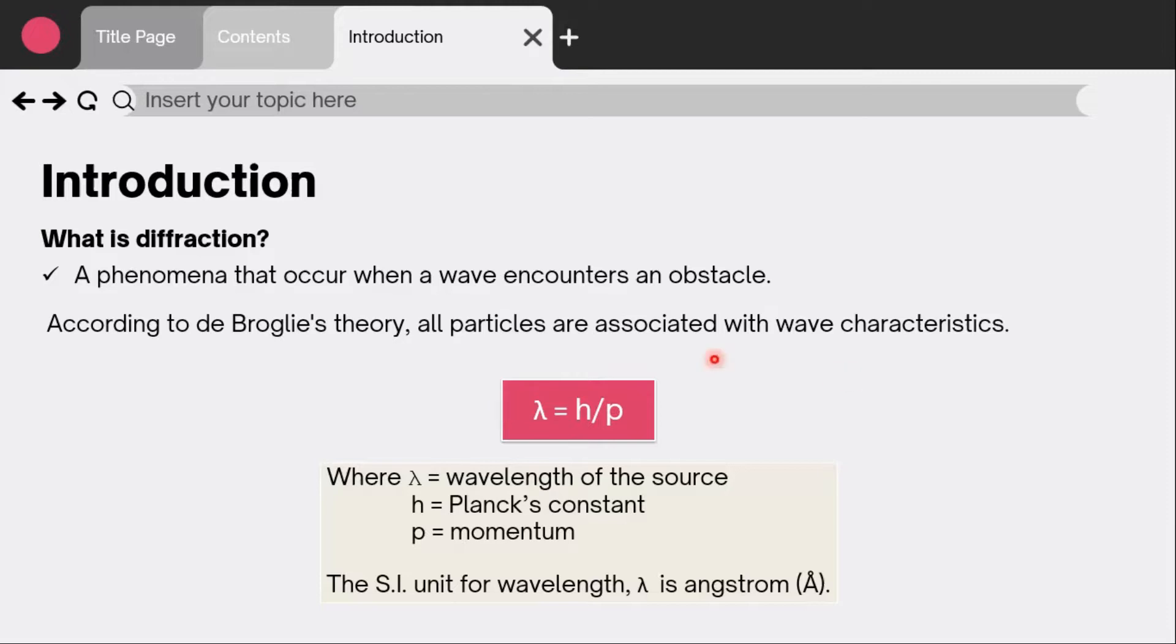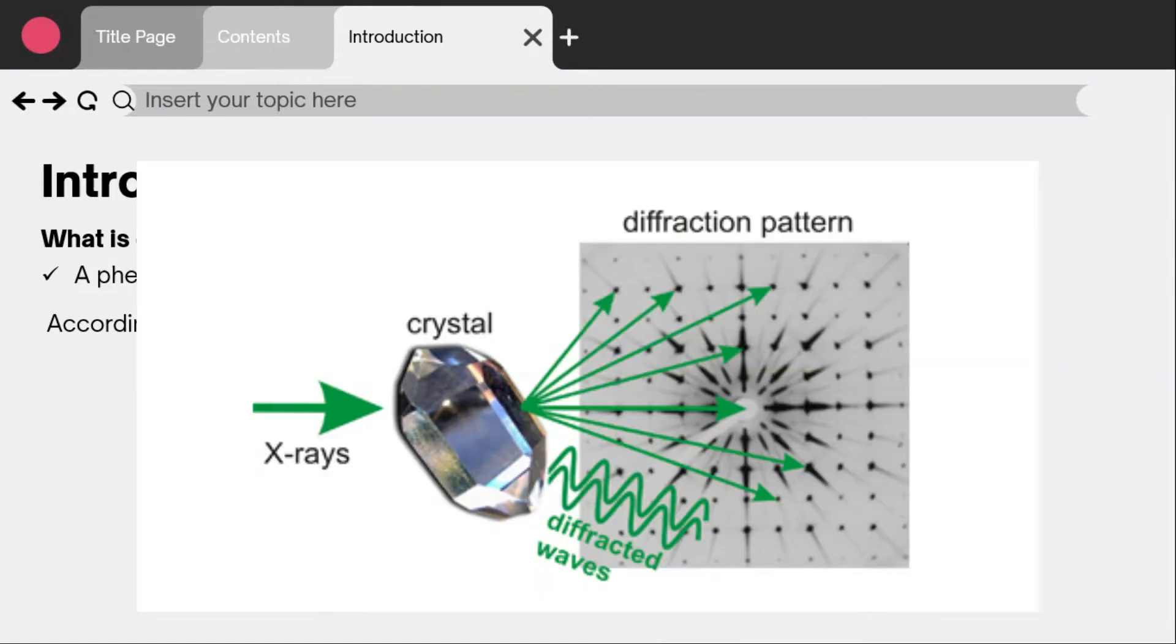This wavelength is given by lambda equals h over p, where lambda is the wavelength of the source, h is the Planck constant, and p is the momentum. The SI unit for wavelength is angstroms. Thermal neutrons from nuclear reactors are suitable for crystal structure studies. Neutrons are diffracted by crystals similar to x-rays.